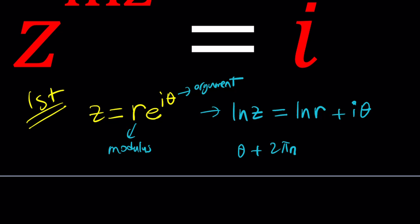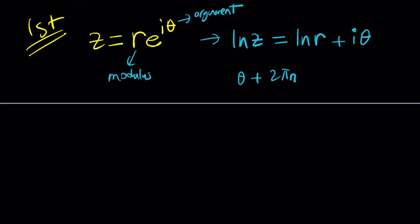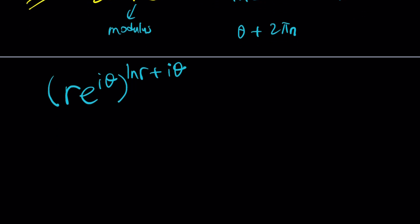Now if we do the replacements, we get R e to the i theta raised to the power ln Z, which is ln R plus i theta. So to be able to raise this number to a complex power, I'm going to go ahead and separate them. So kind of like using exponentiation, again, this could be problematic because these are not real numbers, but I'm going to do it anyways.